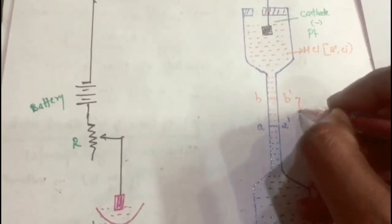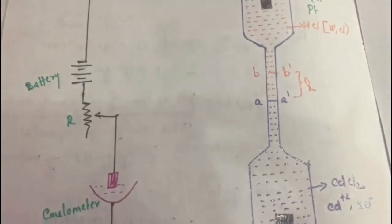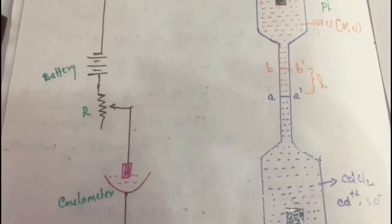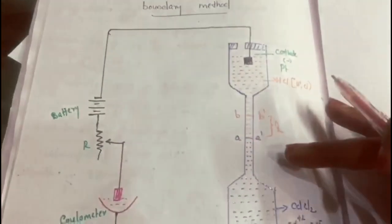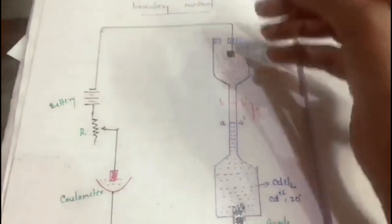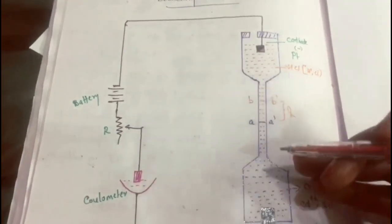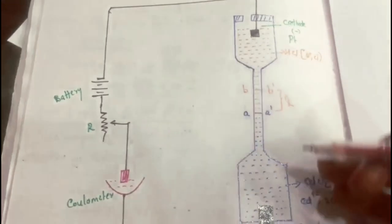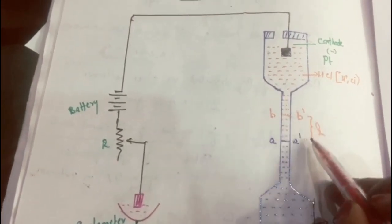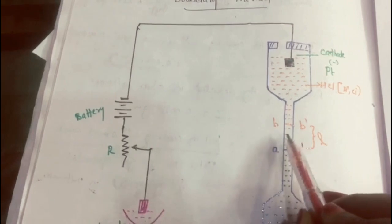Suppose the distance the ions move, from AA' to BB', is L and the area of cross section is A. On passing electricity, HCl is at the top of the tube and CdCl₂ at the bottom. H⁺ moves towards the cathode along with slow-moving Cd²⁺, and Cl⁻ moves towards the anode, so the boundary shifts from AA' to BB'. The distance travelled is L and the area of cross section is A, so the volume equals distance times area, i.e., A × L.